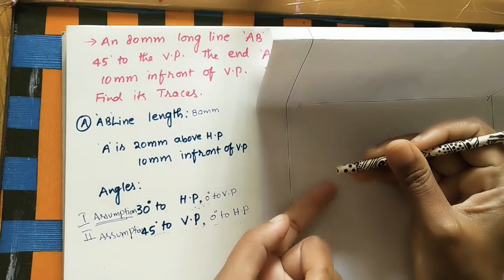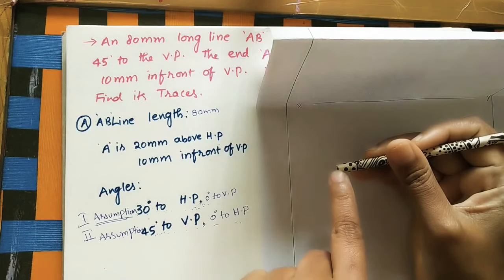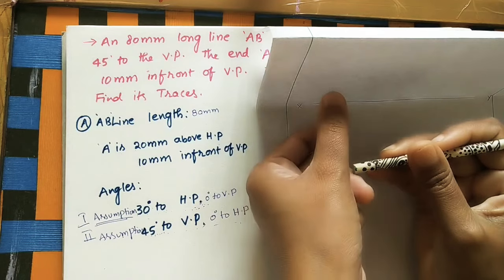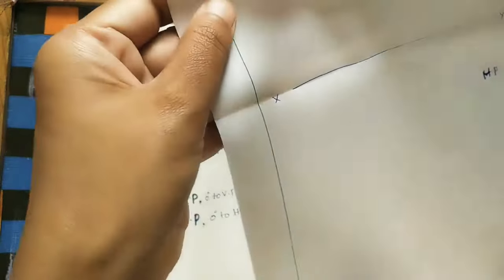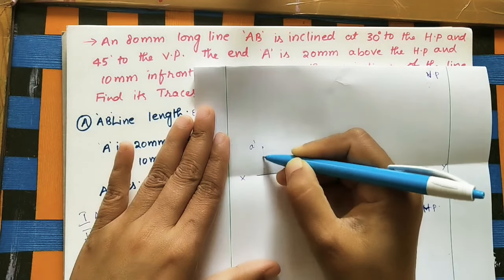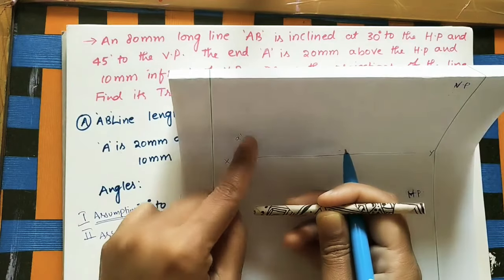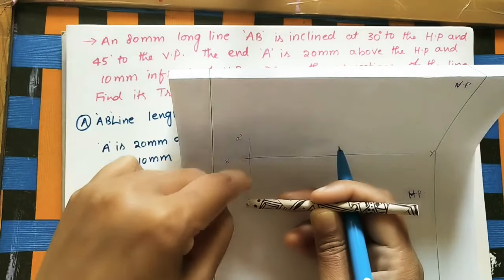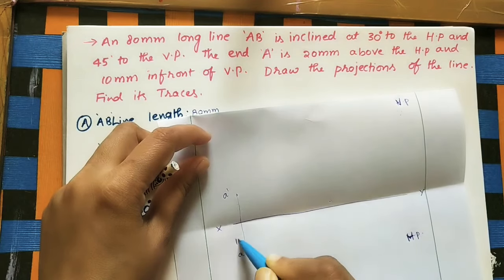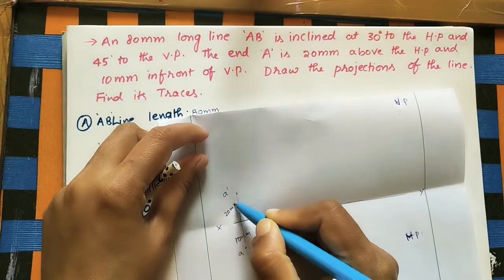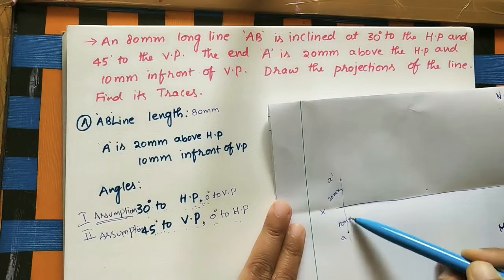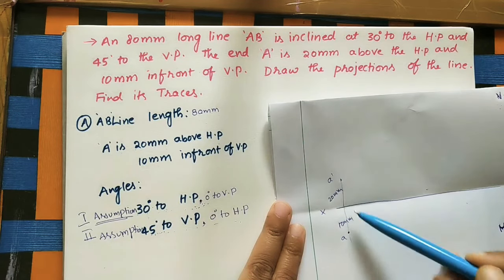A is 20 mm above HP, so we mark a' (a-dash) 20 mm above the XY line for the front view. For the top view, A is 10 mm in front of VP, so we mark a 10 mm below the XY line. Always remember: above HP means above the XY line; in front of VP means below the XY line. A' and a must lie on the same projector line.